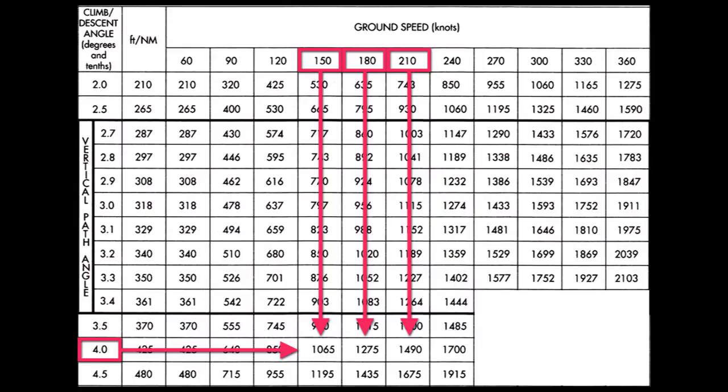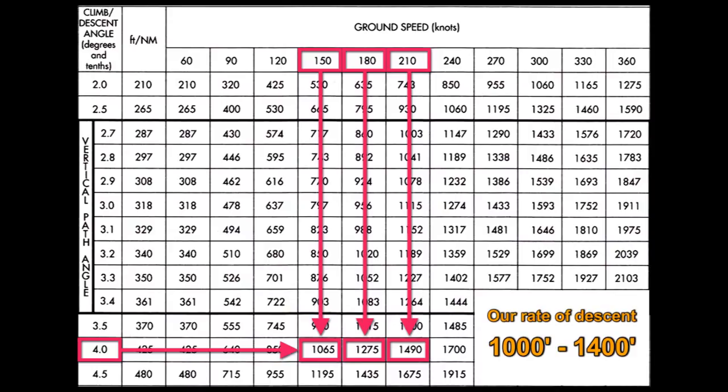For this approach I'm going to use the Airbus A320, so our ground speed is going to be anywhere from 150 to 210 knots depending on winds. For a 4 degree glide slope, we have a rate of descent of 1,065 feet per minute for 150 knots ground speed, 1,275 feet per minute for 180 knots, and 1,490 feet per minute for 210 knots. So for our 3.8 degree glide slope, our descent rate will be from 1,000 to 1,400 feet per minute.